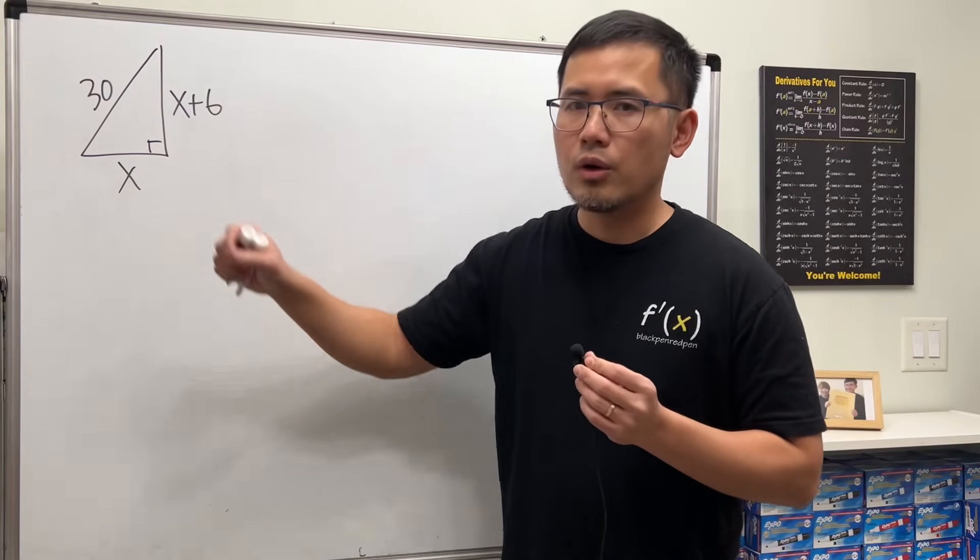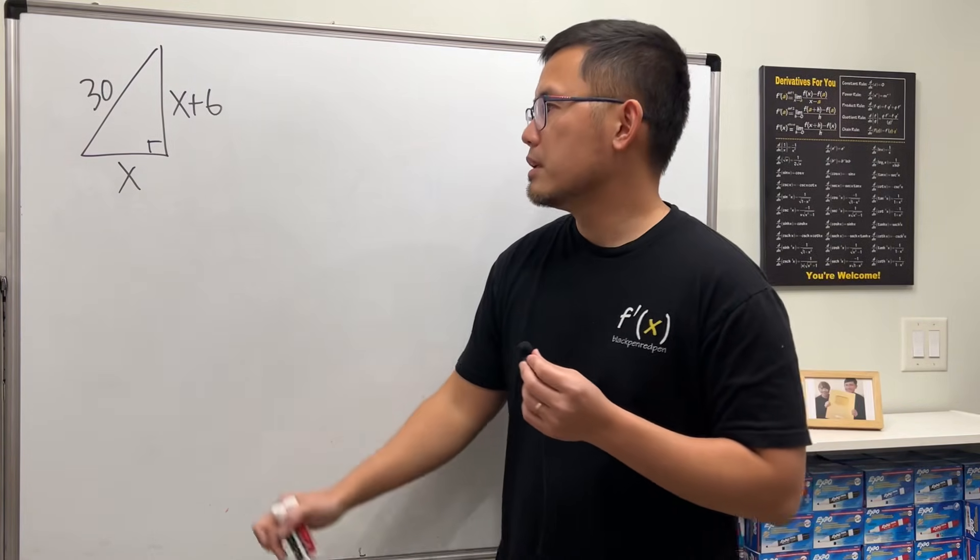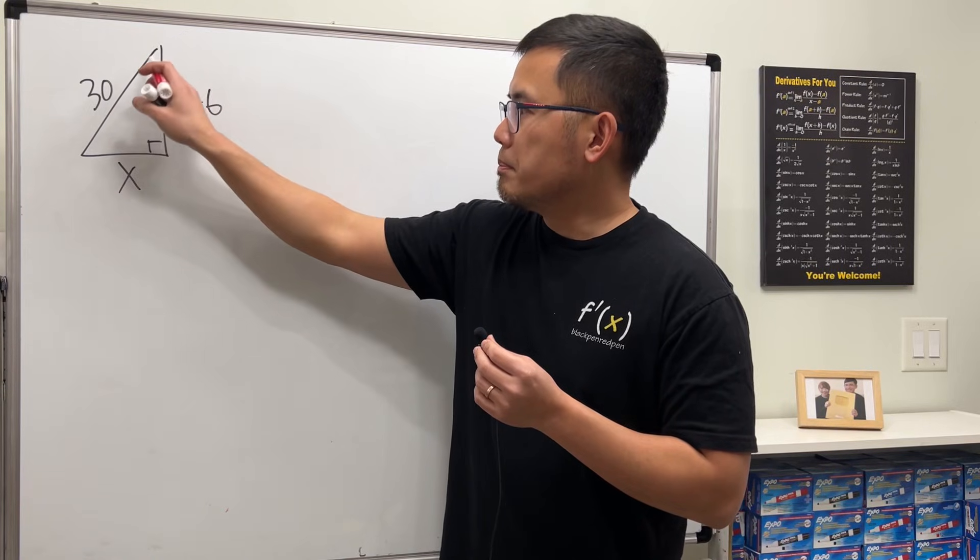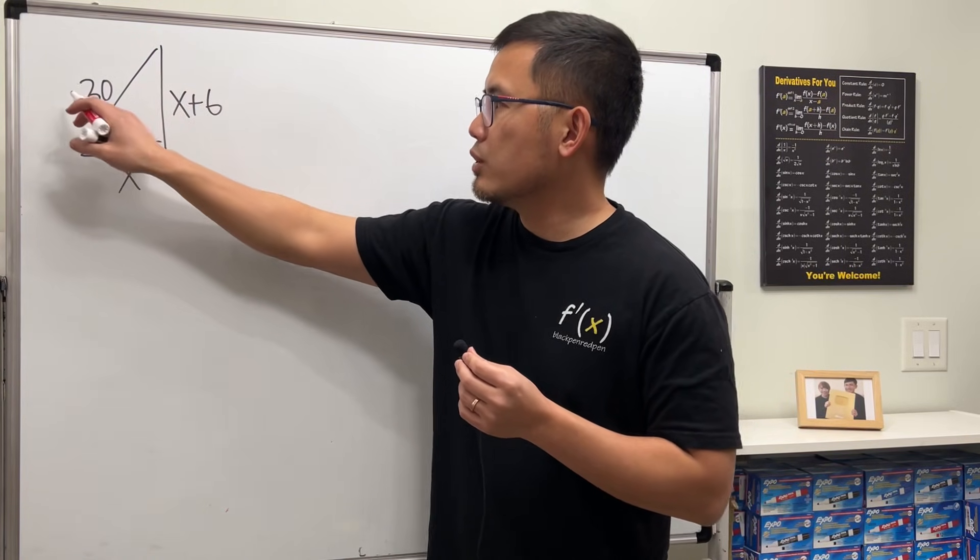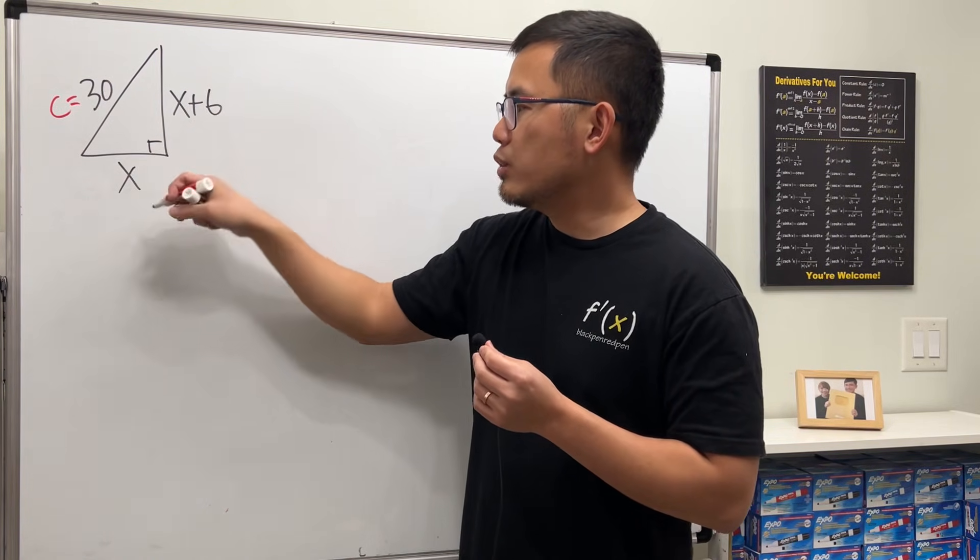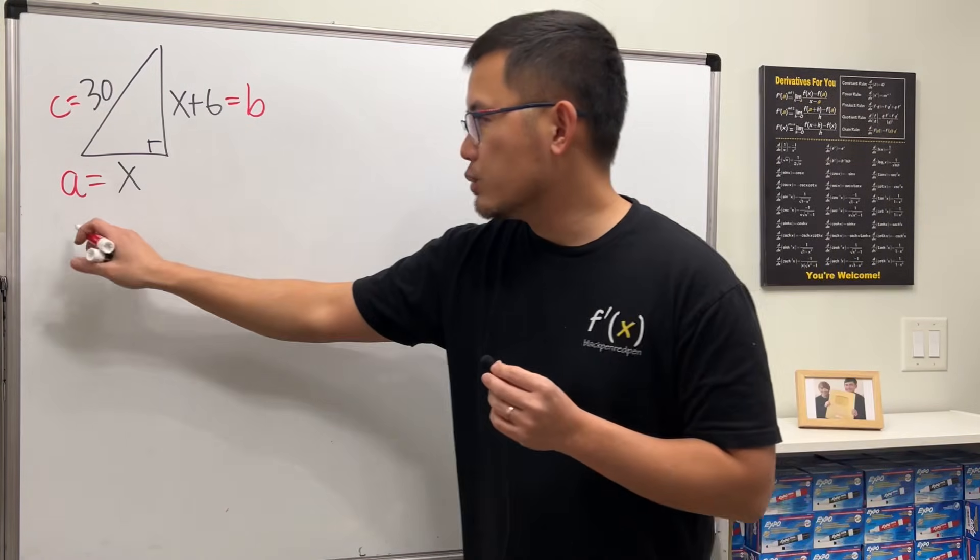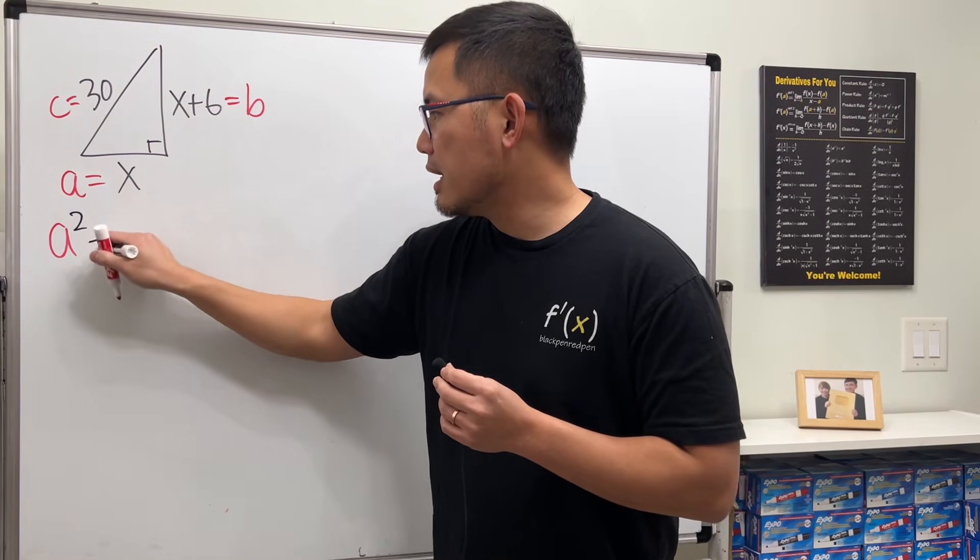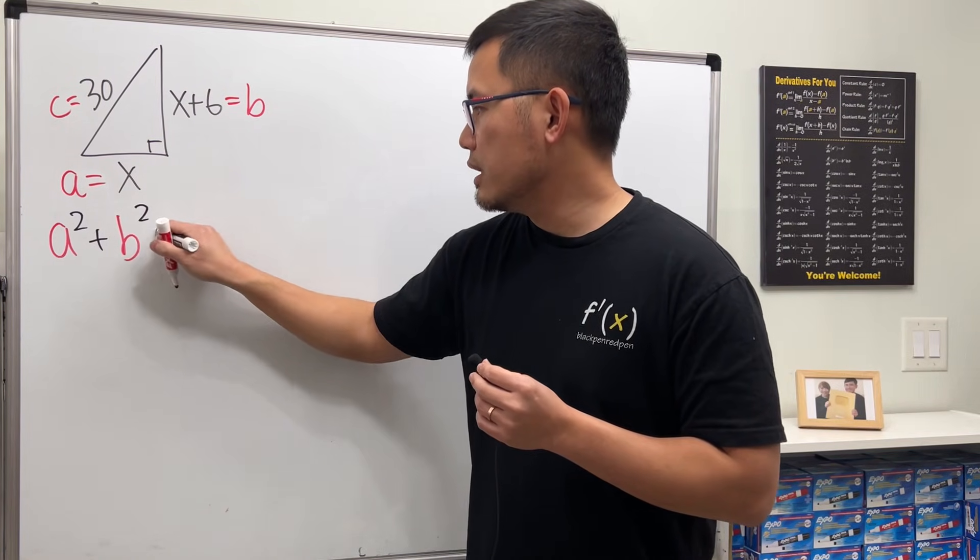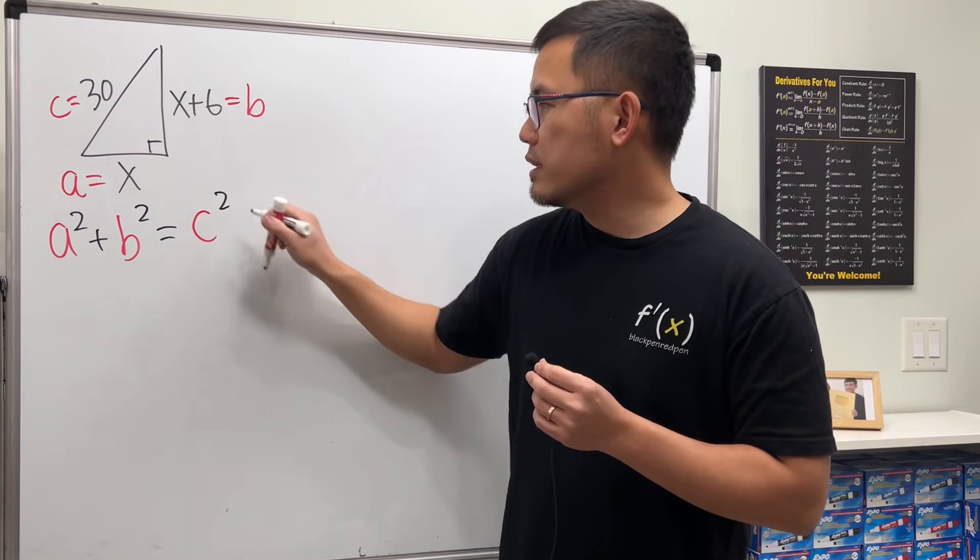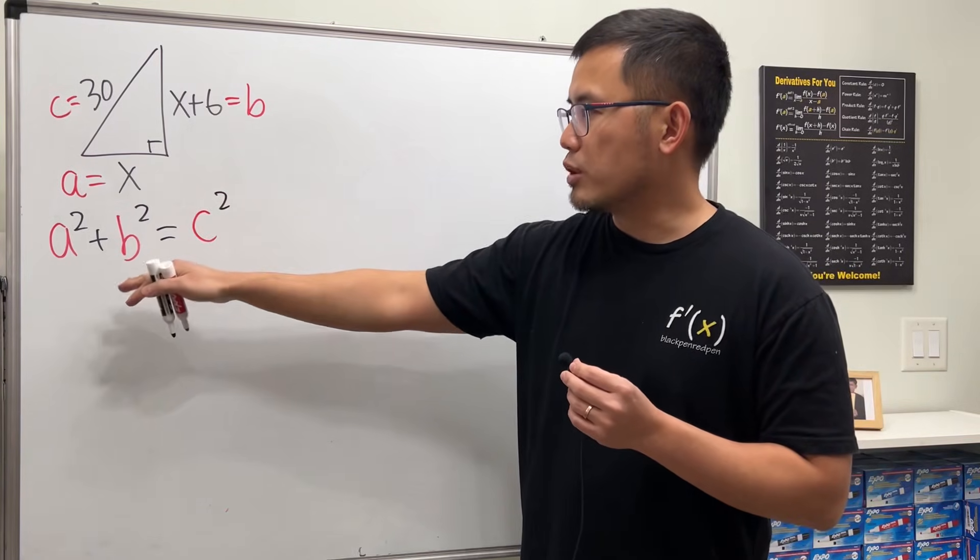Right here we have a right triangle, and we can use the Pythagorean theorem. Make sure that you label the hypotenuse, which is the longest side, to be c, and the other two sides, you can just put them to be a and b. The Pythagorean theorem says we have a² + b² = c², and then just drawing the expressions and also the number.